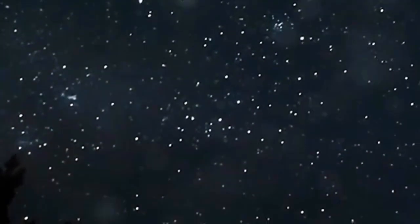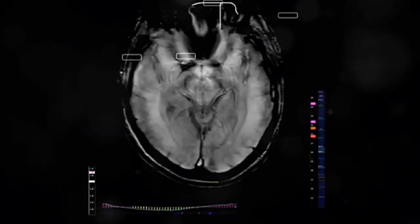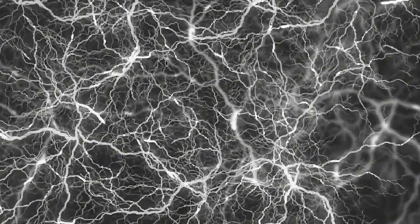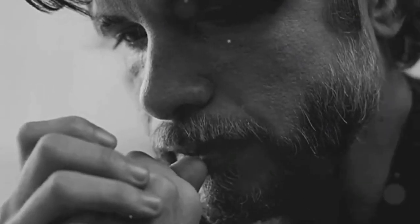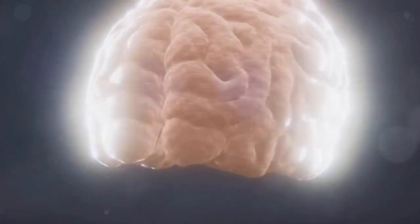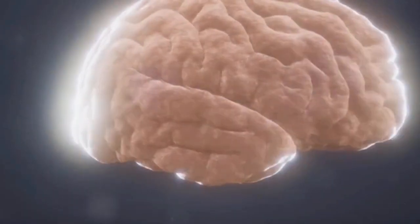Section Four: As Above, So Below. The human brain is a marvel of complexity. It contains billions of neurons interconnected in a vast network. These connections allow us to think, feel, and experience the world around us. But what if the universe itself is structured like a giant brain?